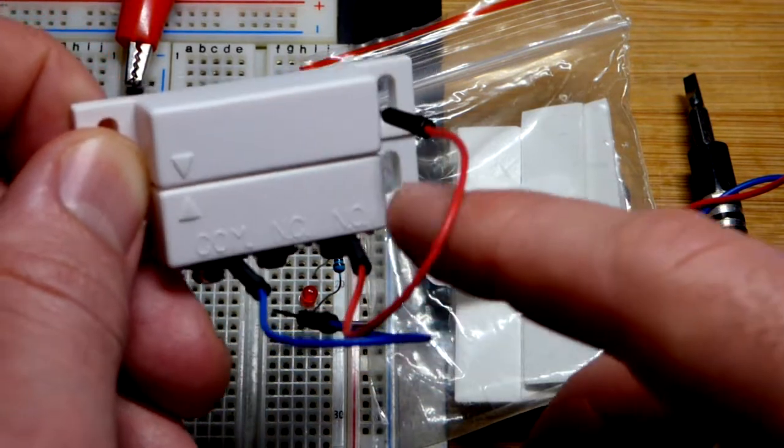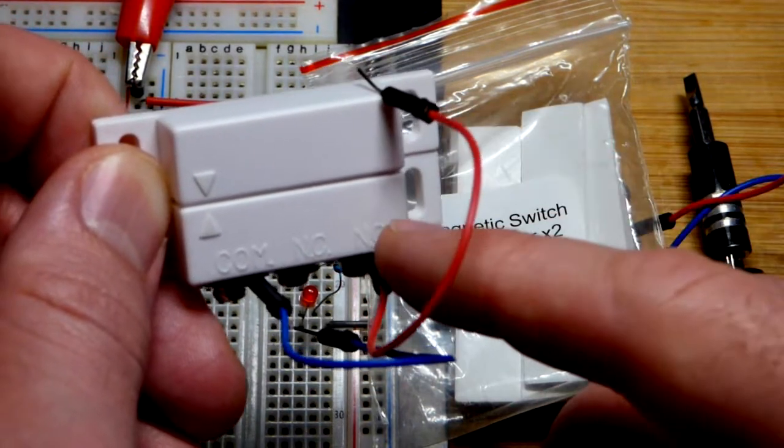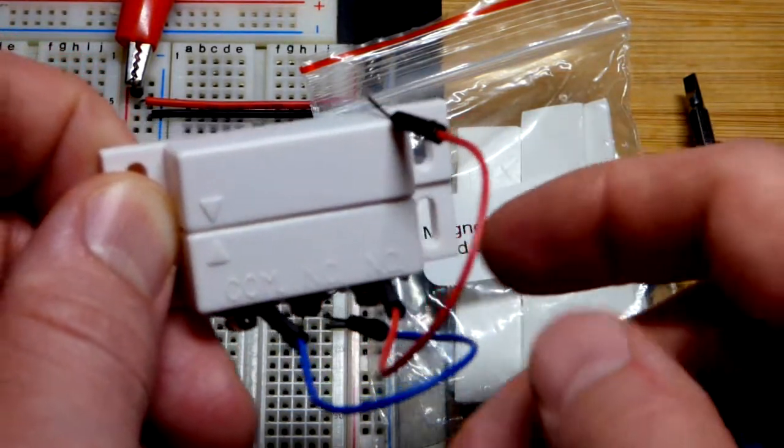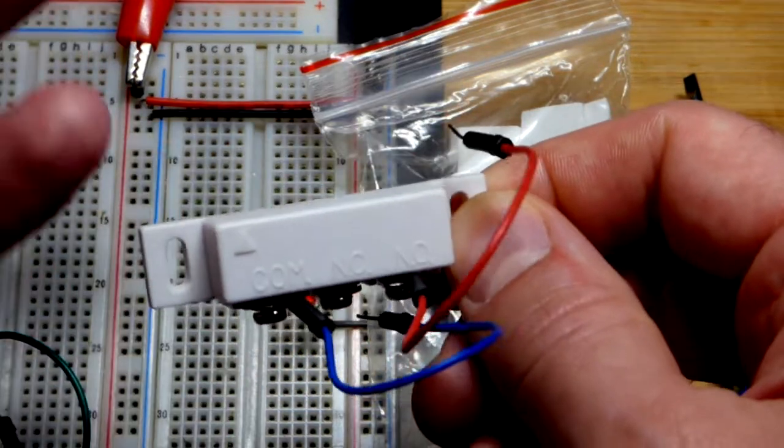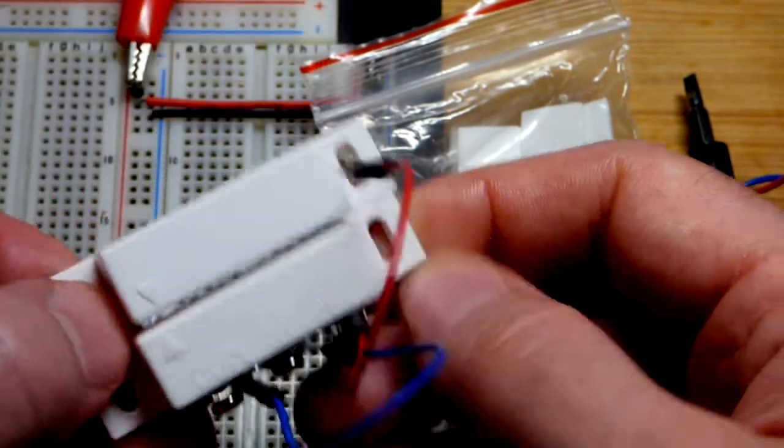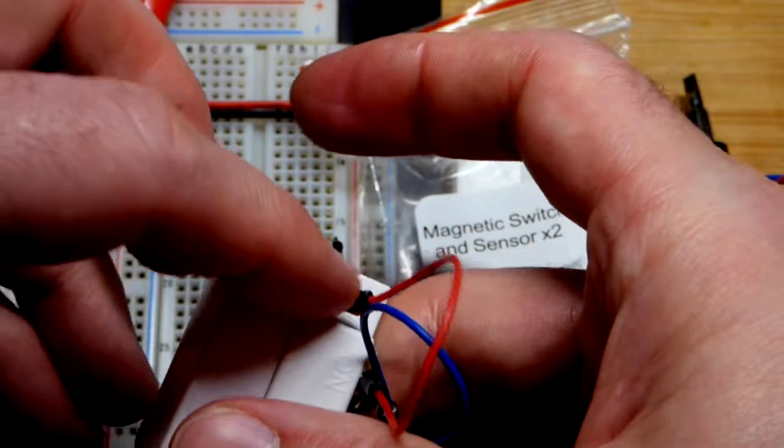Then there's normally open which we have the red jumper connected. So this is the normal position with the magnet as I said before. So right now common is connected to normally closed. And if I open this, now common is connected to normally open. And we will demonstrate that on the board.